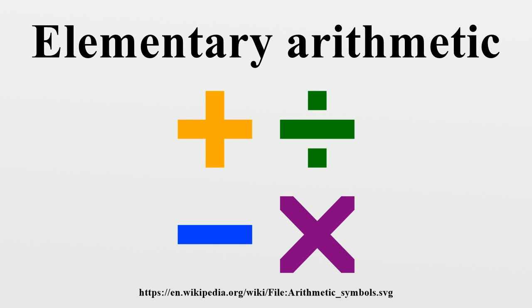As a final caution, the borrowing method gets a bit complicated in cases such as 100 minus 87, where a borrow cannot be made immediately and must be obtained by reaching across several columns. In this case, the minuend is effectively rewritten as 90 plus 10, by taking a 100 from the hundreds, making 10 tens from it, and immediately borrowing that down to 9 tens in the tens column and finally placing a 10 in the ones column.